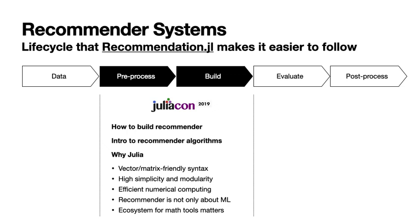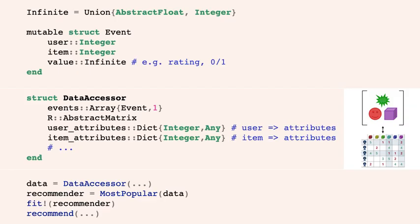In practice, the life cycle of recommender systems spans from data collection through post-processing. The data accessibility of the recommendation.jl package was something I highlighted in the 2019 JuliaCon presentation — if you're interested in those details, you can take a look at the recording on the JuliaCon YouTube channel.